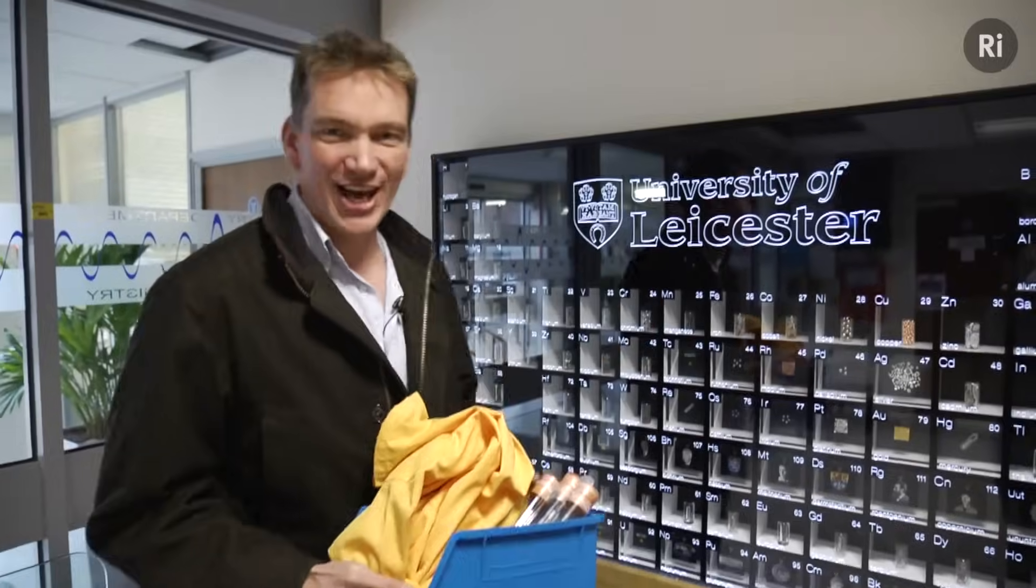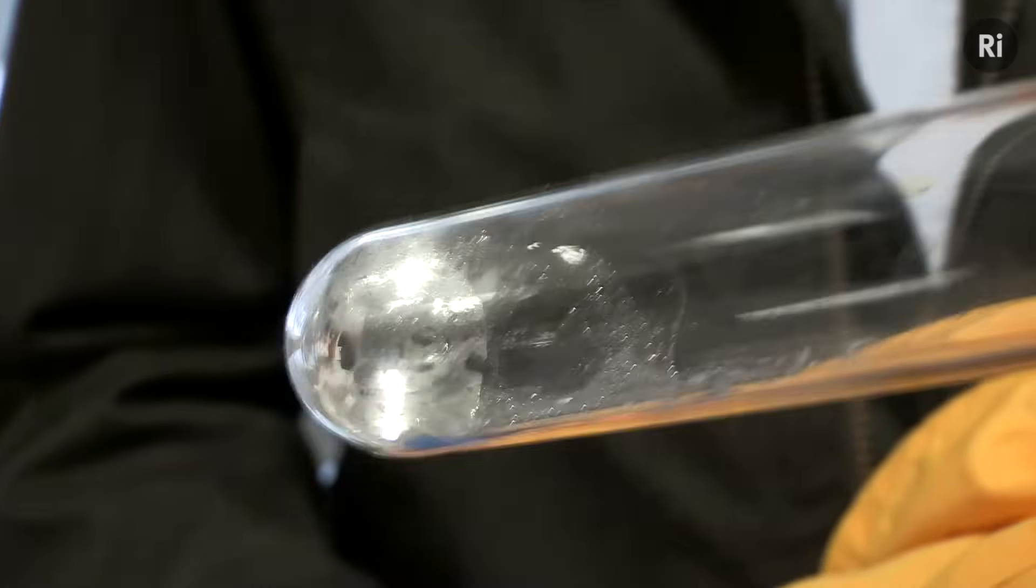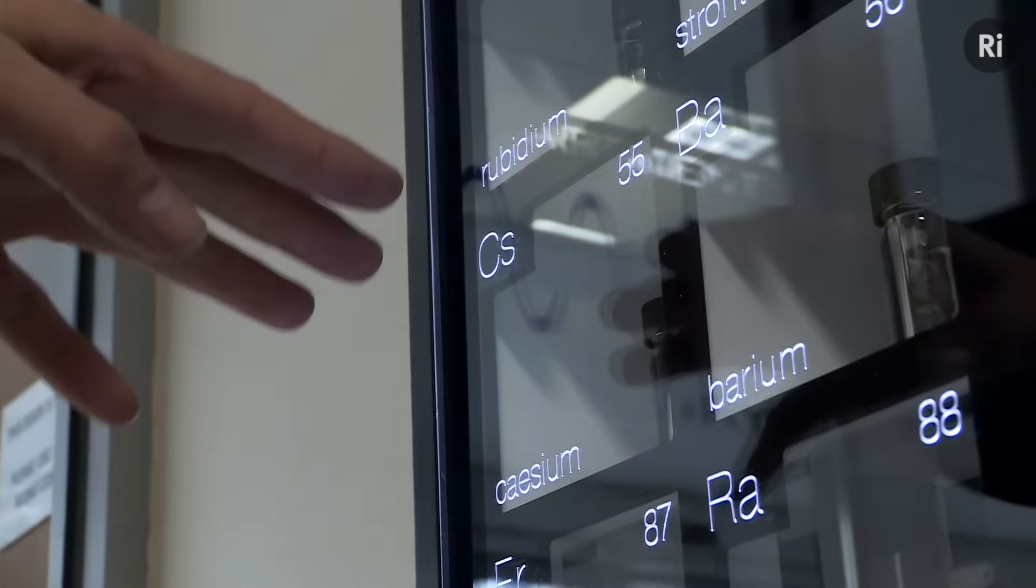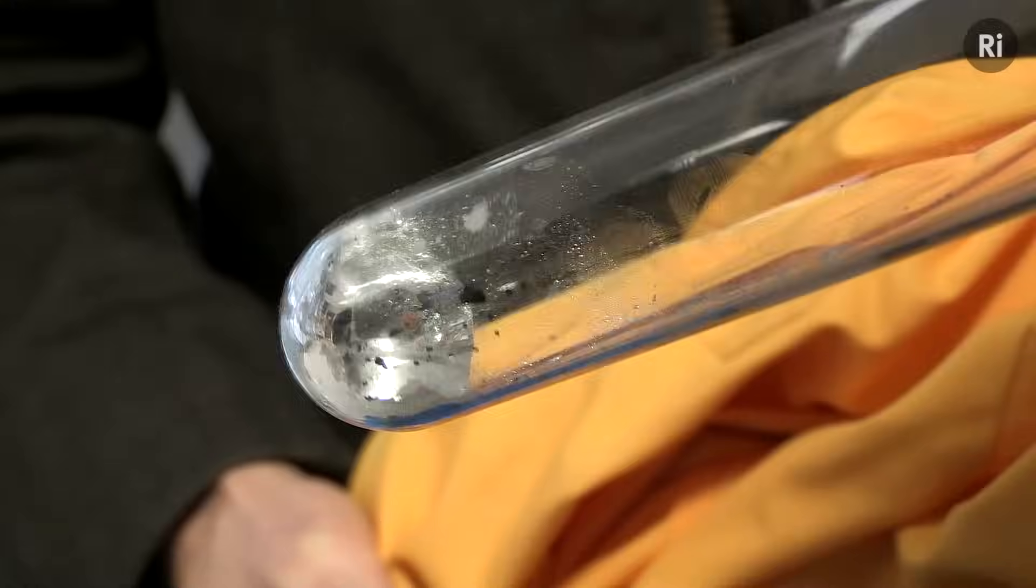So I've come up to the University of Leicester and I've brought with me a tube here containing caesium. Caesium is found in the far corner here and it is the most reactive metal in the entire periodic table, even more reactive than francium. This is a radioactive element and it decays, but actually caesium is more reactive than this. It's the most reactive thing we can find.